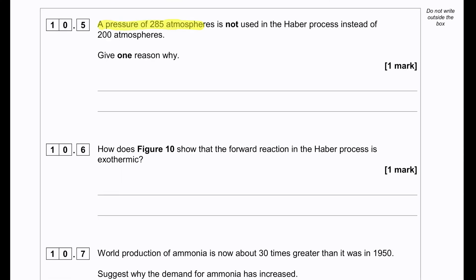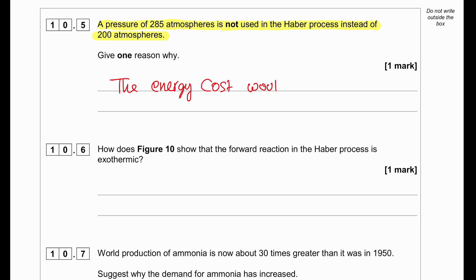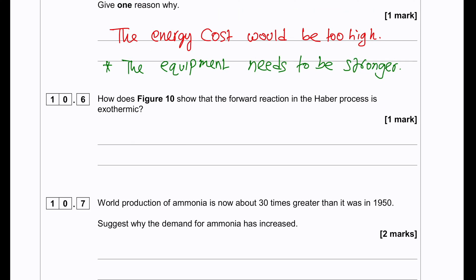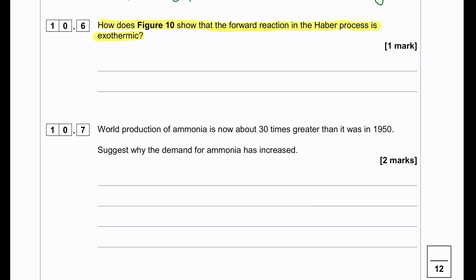A pressure of 285 atmospheres is not used in the Haber process instead of 200 atmospheres. Explain one reason why. Using higher pressure requires more expensive operating equipment, so the energy cost to produce that pressure and the equipment cost would be too high. How does Figure 10 show the forward reaction in the Haber process is exothermic? When we increase temperature, according to the graph, we see that increasing temperature decreases the percentage yield at the same amount of pressure. That means the forward reaction is exothermic. Higher temperature produces a lower percentage yield of ammonia, so the forward reaction is exothermic and the backward reaction is endothermic.